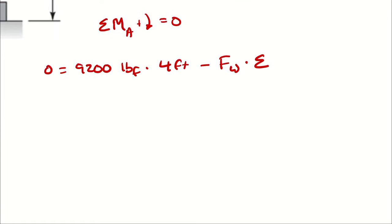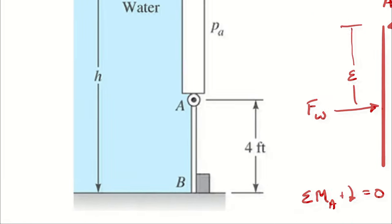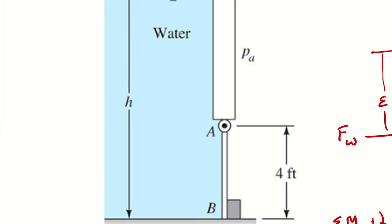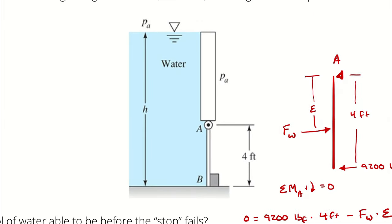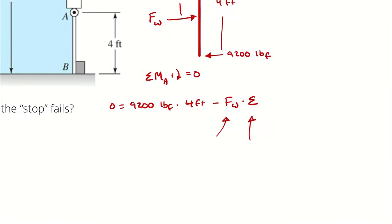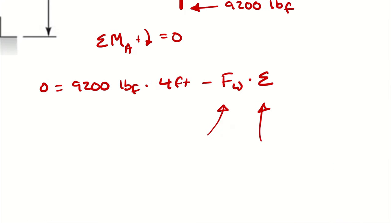In our approach here, we are going to try to write Fw and epsilon in terms of h, the height of the water. Once we can write them in terms of h, we can plug them into this equation and solve for h.